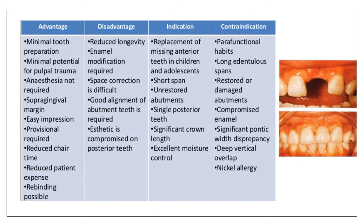The indications for resin bonded FPD include: replacement of missing anterior teeth in children and adolescents; short edentulous spans where fewer teeth are missing; healthy, unrestored abutments; replacement of a single posterior tooth with significant crown length. Good moisture control is also required since composite resins are used.